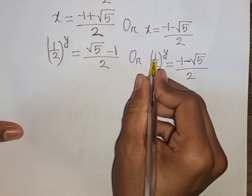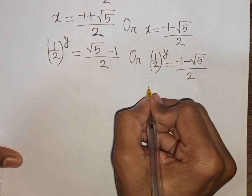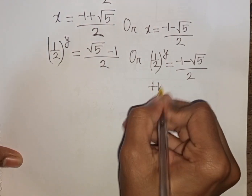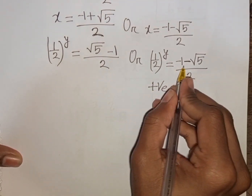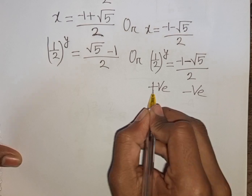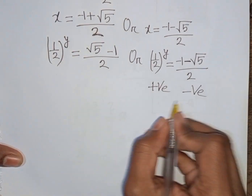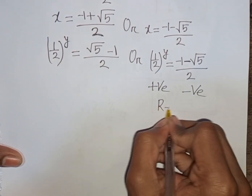Now we see (1 over 2) power any number is always positive, but (minus 1 minus square root of 5) over 2 is negative. Positive cannot equal negative, so this solution is rejected.